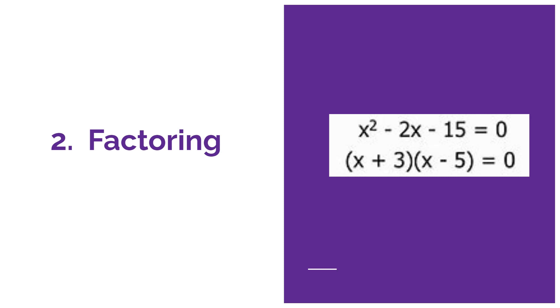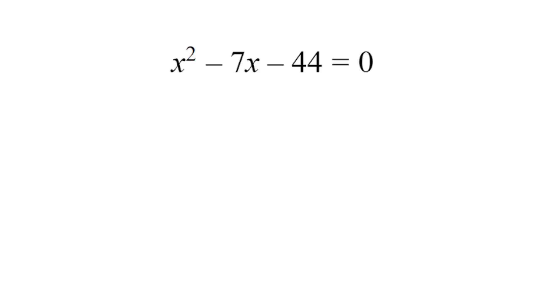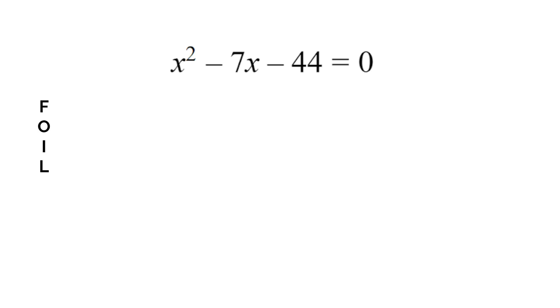The second method is factoring. We rewrite the quadratic equation as a product of linear factors, then set each factor equal to zero to solve. The first example is the equation x squared minus 7x minus 44 equals zero. We can see that a equals 1, b equals negative 7, and c equals negative 44. We're going to find the factors using a method known as FOILing. FOIL stands for First, Outer, Inner, and Last. The product of the first terms of the linear factors equals ax squared. We need to find two numbers that add up to negative 7 and multiply to negative 44.